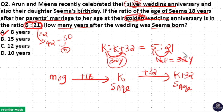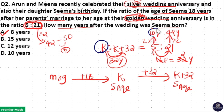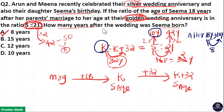Since 1 part equals 2 years, 5 parts equals 10 years and 21 parts equals 42 years. So K equals 10 years. That is, after 18 years of marriage, Sima's age is 10 years, which means Sima was born 8 years after their marriage. So option A is your answer.